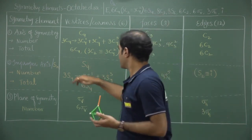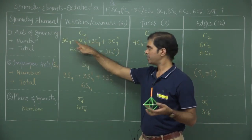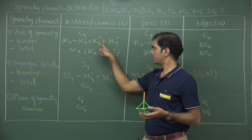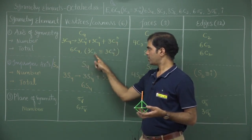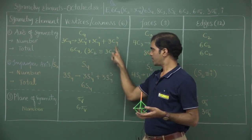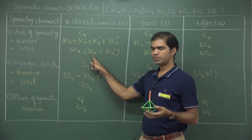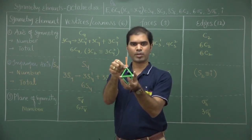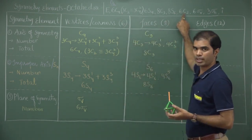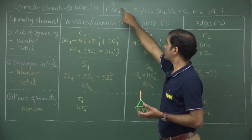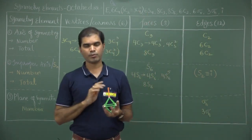Through the corners, the axis of rotation is completed. The axis of symmetry through the vertices gives C4. There are 3 C4 axes, each generating C4¹, C4², and C4³. Altogether there are 9 C4 elements: 6 are simple C4s and 3 are C2s generated from C4². This C2 passing through the corners is different from the C2 passing through the edges.